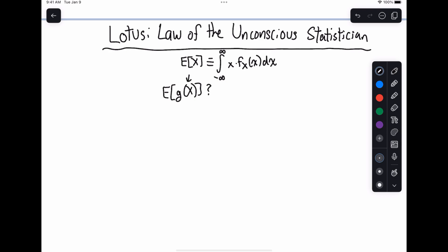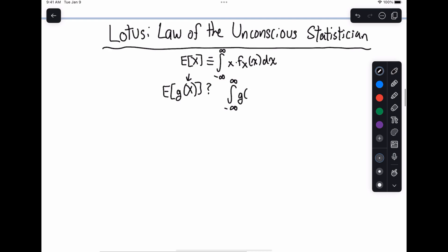Of course, this won't be big X because this is like a function applied to the random variable. What you're going to have instead, if you were to say the integral from minus infinity to infinity of g of little x times fx of x dx, you would be absolutely right. This is actually what you do. You just substitute in g of x for the function.